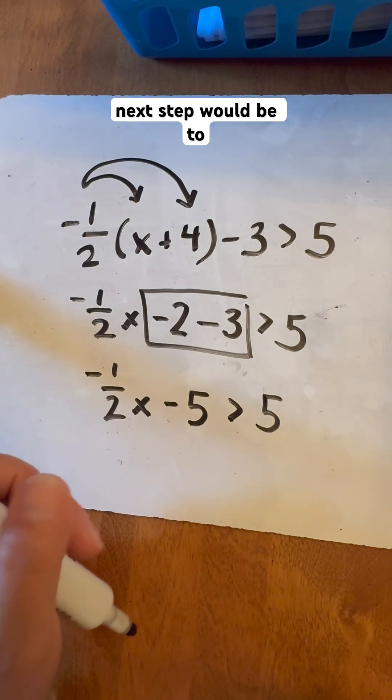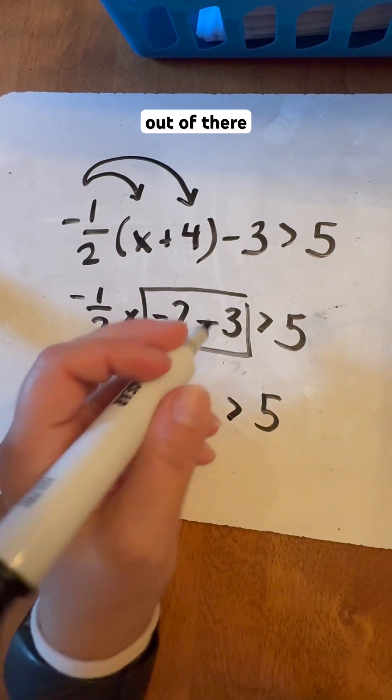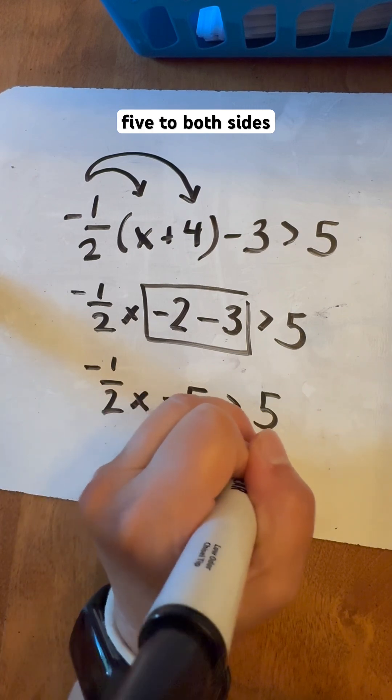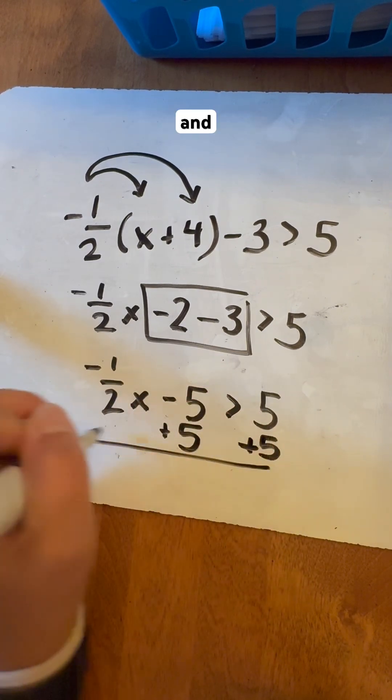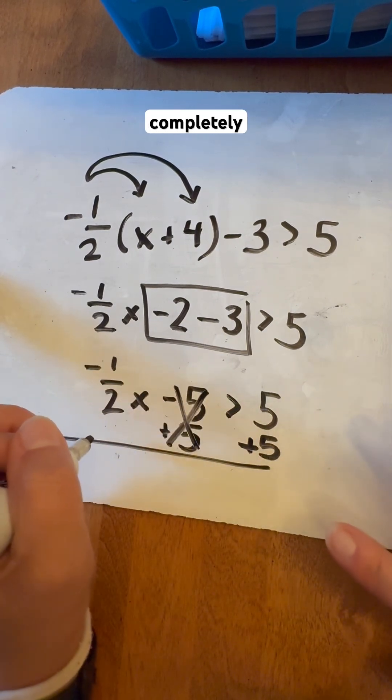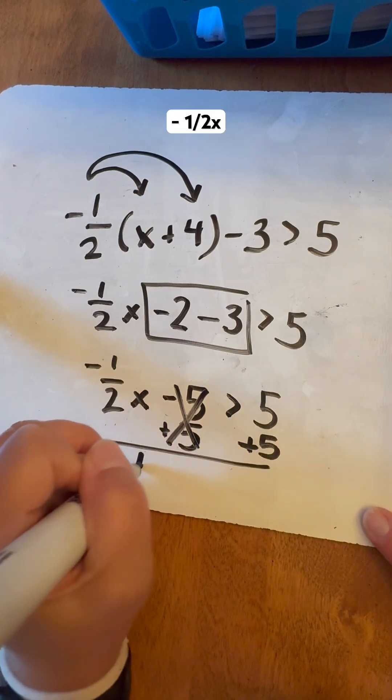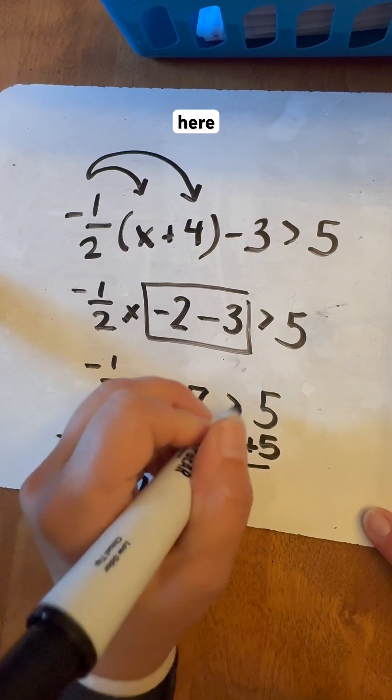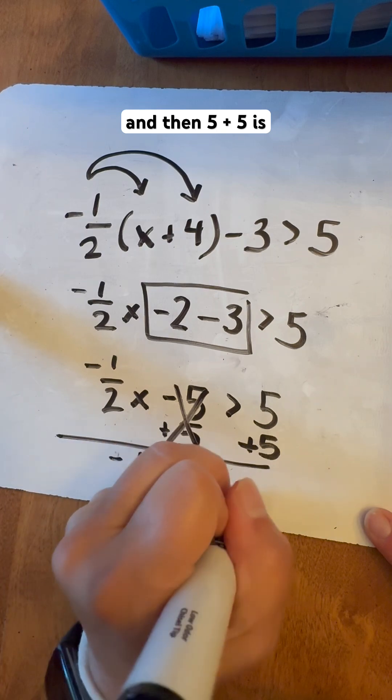So then my next step would be to get that five out of there, get away from the x by adding five to both sides. And that's going to leave that gone completely with just the negative one half x over here, greater than, and then five plus five is ten.